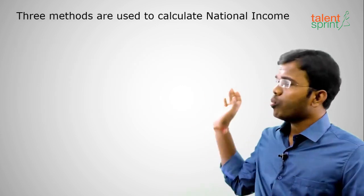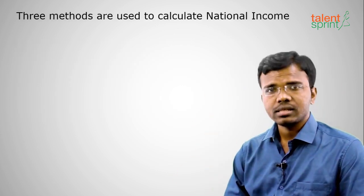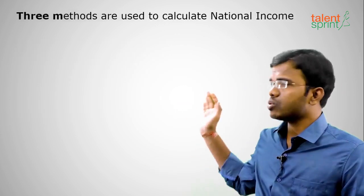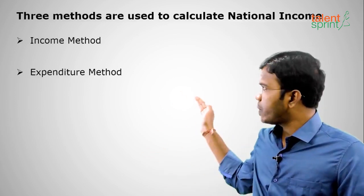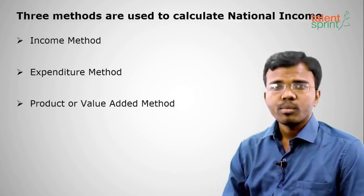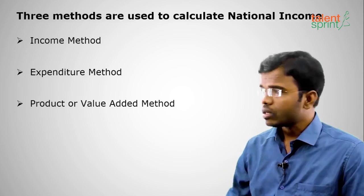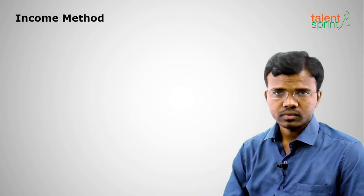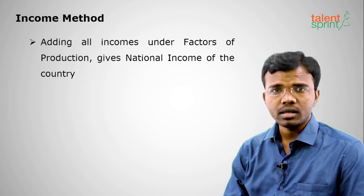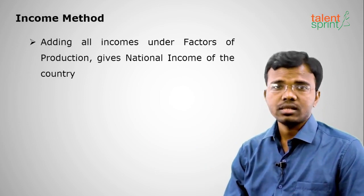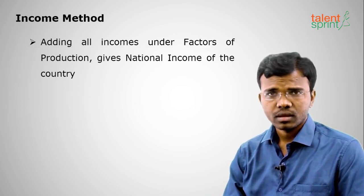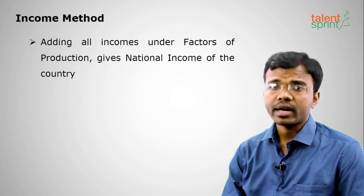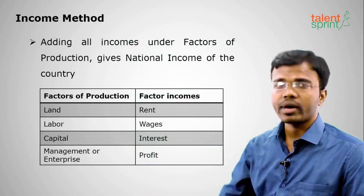There are three methods to calculate national income: the income method, the expenditure method, and the product or value added method. Under the income method, adding all incomes in the country gives national income. Income is generated from four factors of production: land, labour, capital, and management.